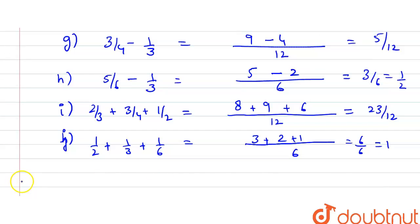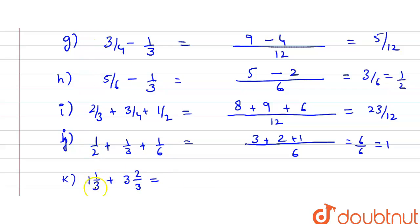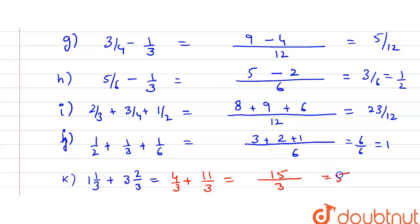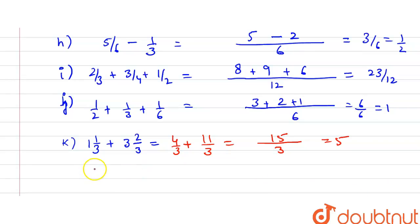Part (k) is 1⅓ + 3⅔. Convert to improper fractions: 1⅓ = 4/3, and 3⅔ = 11/3. Adding 4/3 + 11/3 = 15/3, which equals 5.